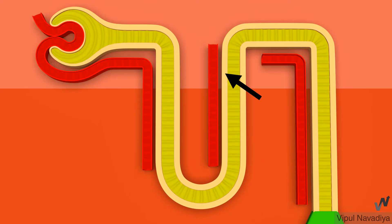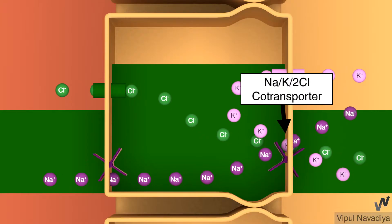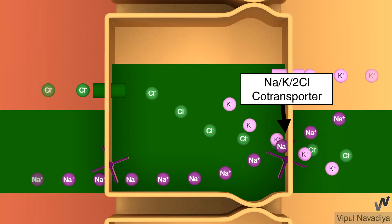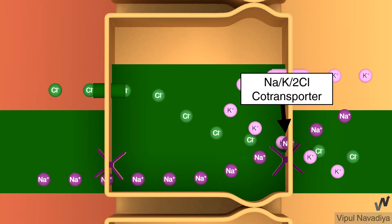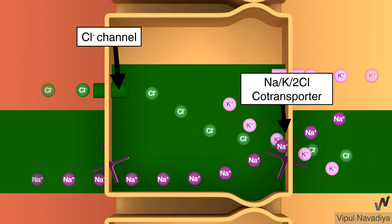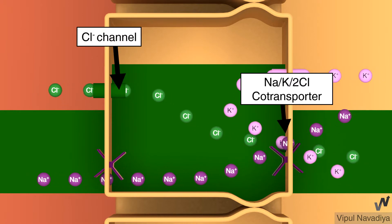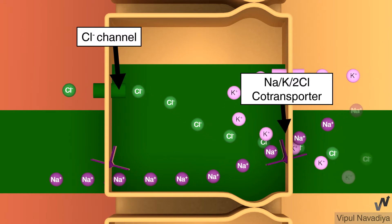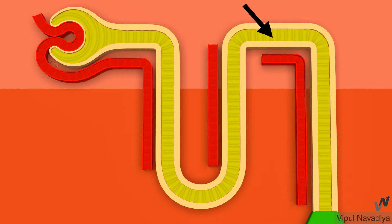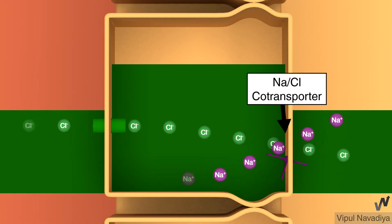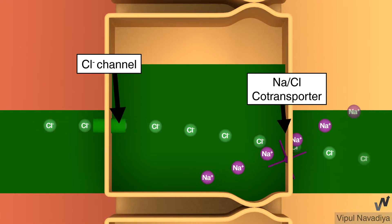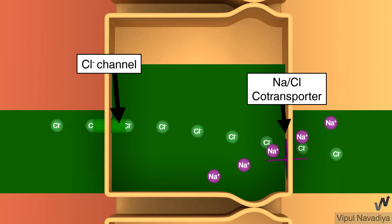In the thick ascending limb, entry at the luminal membrane occurs by the sodium-potassium-2-chloride cotransporter and exit at the basolateral membrane by chloride channels — the same transporters as seen during sodium reabsorption. In the distal tubule, apical entry occurs by the sodium-chloride cotransporter and basolateral exit by chloride channels.